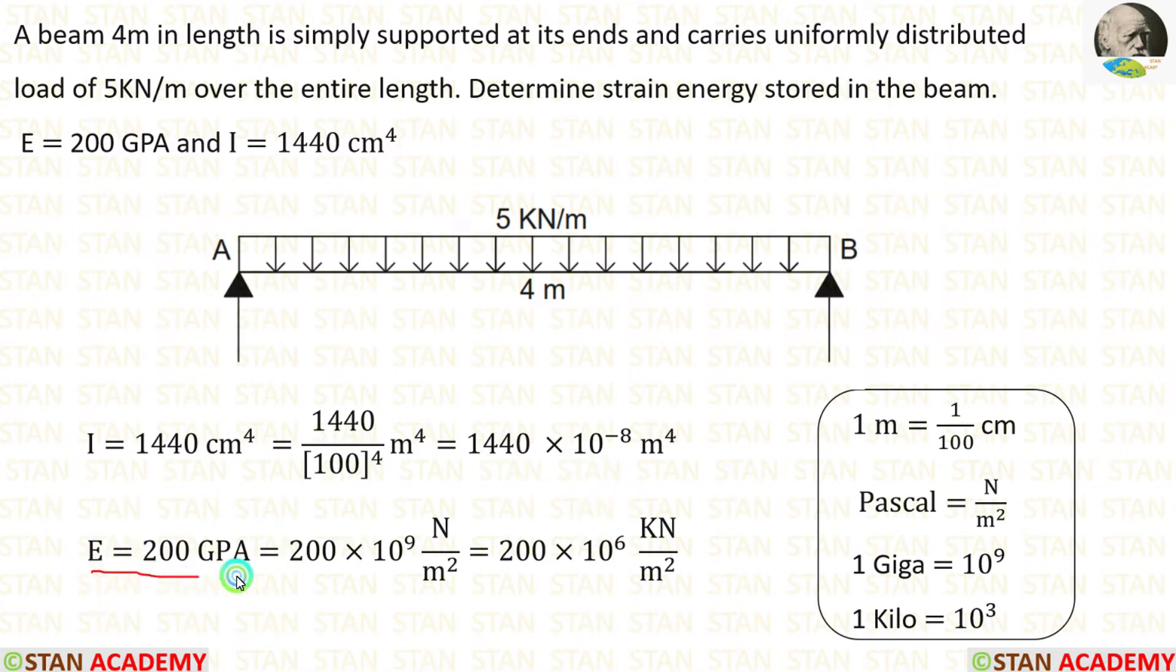The Young's modulus is given as 200 gigapascal. We know that 1 giga is equal to 10 power 9 and pascal is Newton per meter square. So 200 gigapascal is equal to 200 into 10 power 9 Newton per meter square. The unit of the load is given as kilo Newton per meter. So let us keep all the units in kilo Newton. So we have to convert Newton per meter square into kilo Newton per meter square. 1 kilo is equal to 10 power 3 or 1000. So 200 into 10 power 9 by 1000 we will get 200 into 10 power 6. In this way, we can make the unit into kilo Newton per meter square.